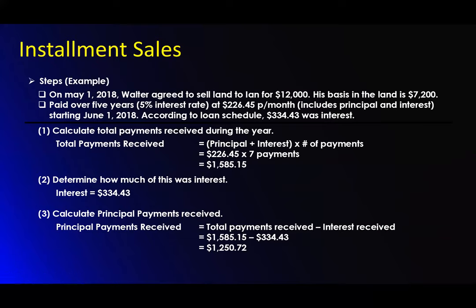On May 1st, 2018, Walter agreed to sell land to Ian for $12,000. His basis in the land is $7,200. It was paid over five years at a 5% interest rate at $226.45 per month — this includes the principal and interest — starting June 1st, 2018. According to the loan schedule, $334.43 was interest. So we calculate the total payments received during the year: $226.45 times seven payments, because he started June 1st, so we got seven payments received. The total amount coming in was $1,585.15.